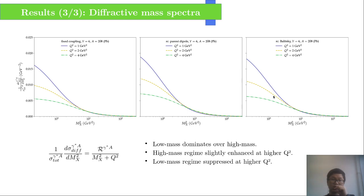Finally, we plot the diffractive mass spectrum, which is related to the gap distribution by a simple relation. We see that low-mass regime dominates over the high-mass one, and they behave differently when varying the photon virtuality.